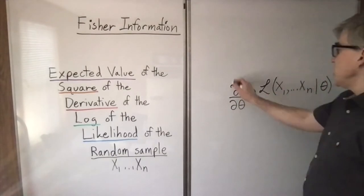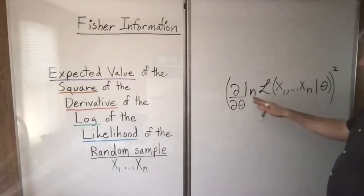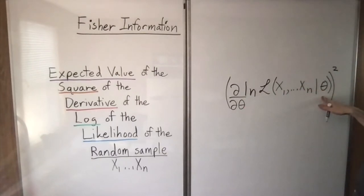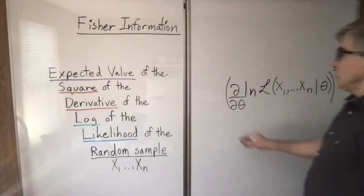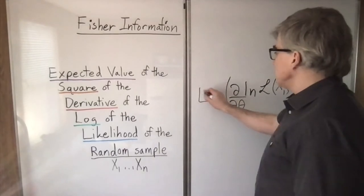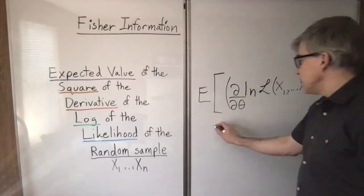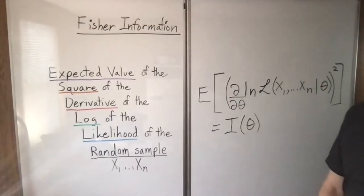Then we take the square of the derivative of the log of the likelihood of the parameters with respect to the data. And then we take the expected value, and that is the Fisher information.